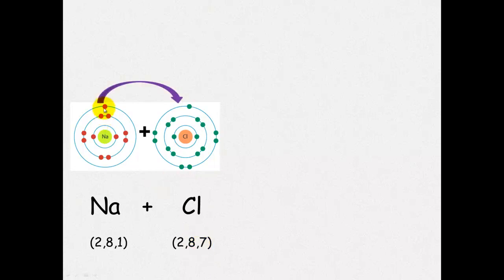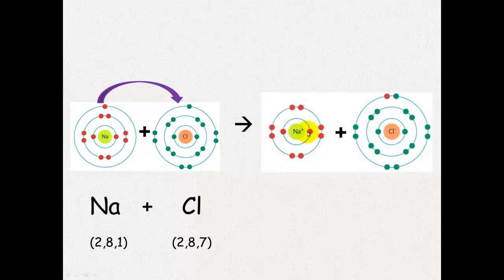So what happens is sodium can give its electron to chlorine to become sodium 1 plus ion, and the chloride negative ion. If you don't understand this, please have a look at my preceding video on ionic formation.